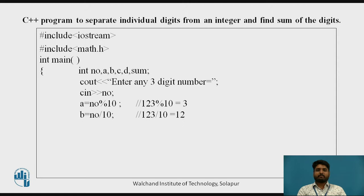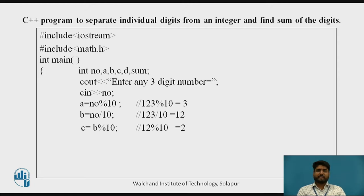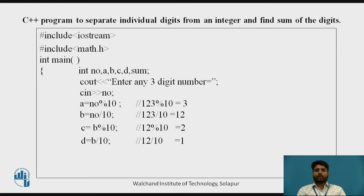Suppose the user enters the three digit number 123. Number modulus 10 gives the remainder 3. We take second variable B equal to number divided by 10, which is 123 divided by 10, giving quotient 12. For the third variable, B mod 10 — that is 12 percent 10 — gives remainder 2. Then using fourth variable D: B divided by 10, so 12 divided by 10 gives quotient 1.